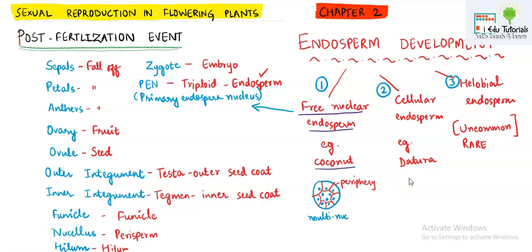The next type of endospermic division is cellular endosperm, where every nuclear division is followed by cytokinesis, meaning each nucleus will be in a specific cell. This type of endospermic division is known as cellular endosperm and is seen in Datura. The last type is helobial endosperm, which is quite uncommon and rare. It is a mixture of free nuclear and cellular endosperm — some cells follow cytokinesis and some do not. It is important to know the term: helobial endosperm is a mixture of free nuclear and cellular endosperm.